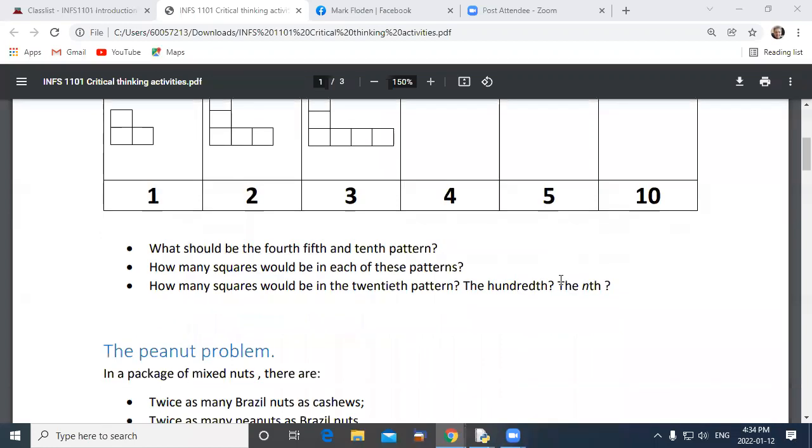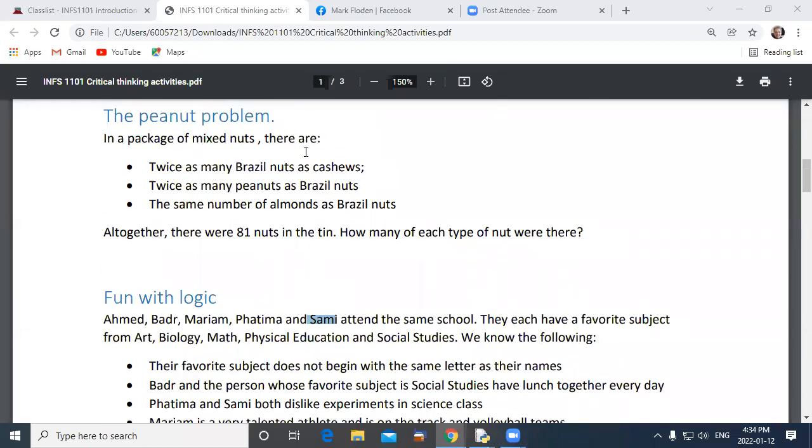The one with the peanuts, what we notice is there seems to be a relationship between cashews and all the other nuts. If we know how many cashews we've got, the number of Brazil nuts would be twice as many. Likewise, the number of peanuts would be twice as many Brazil nuts. We decided that was four times as many as there were cashews, because Brazil nuts are twice as many as cashews, peanuts are twice as many as Brazil nuts. So peanuts must be two times two, which is four times as many as cashews. The number of almonds is the same as the number of Brazil nuts, so almonds is also two cashews.